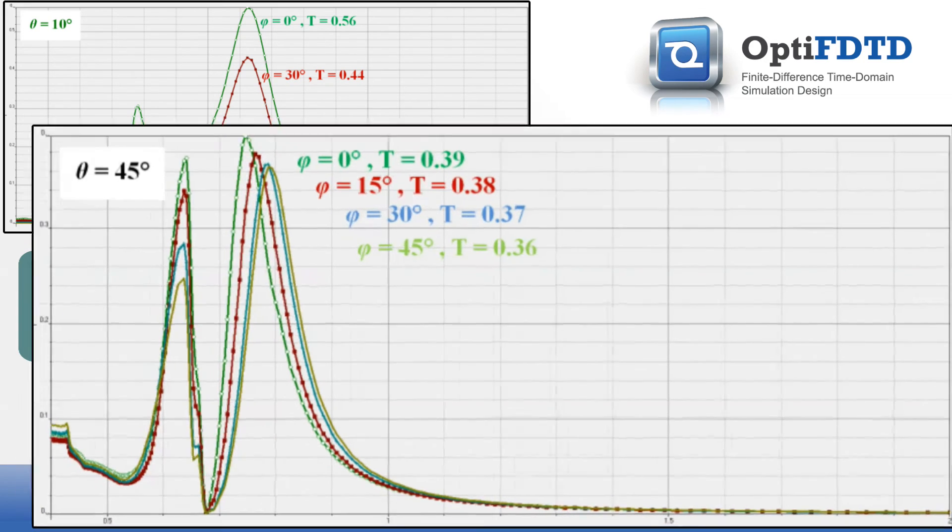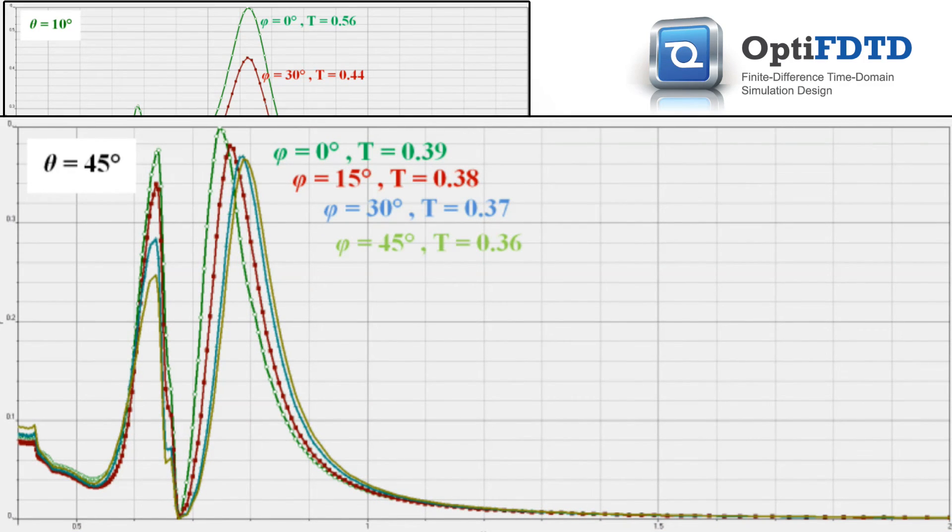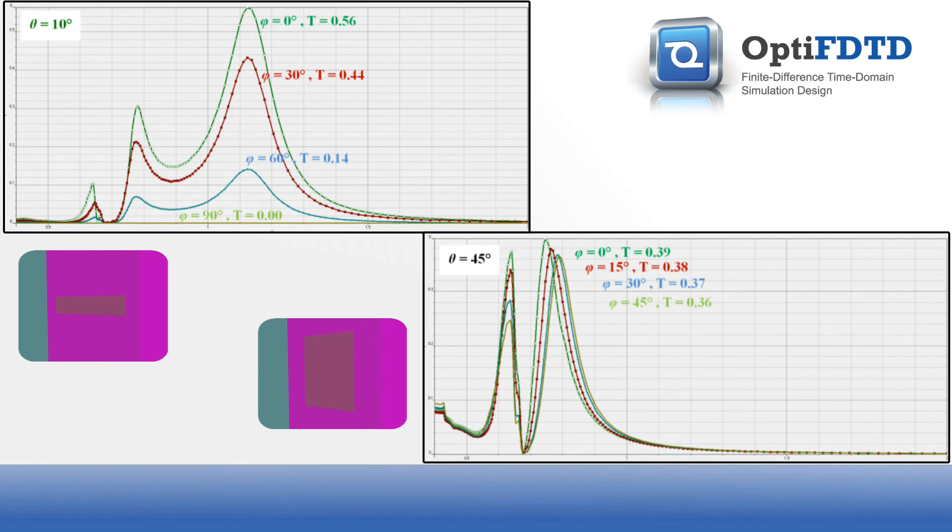For the case of a square unit cell, it is seen that there is a much smaller effect on the transmission spectrum. This is expected since the square is symmetric.